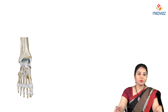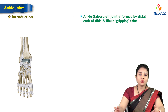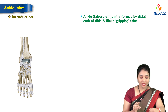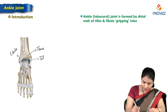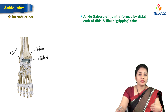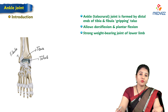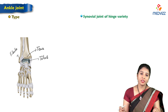Today's topic is the ankle joint, otherwise called the talocrural joint. We can see the anterior aspect where the distal end of tibia and fibula grip the talus. The movements at the ankle joint are dorsiflexion and plantar flexion. The ankle joint is a strong weight-bearing joint of the lower limb, and it is a synovial joint of the hinge variety.